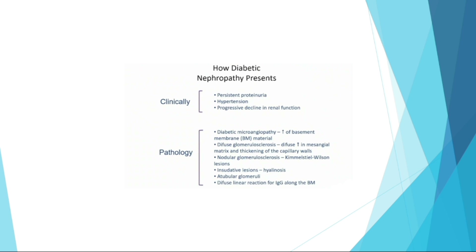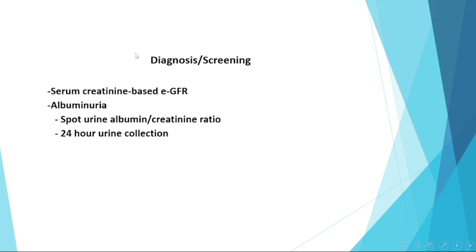Diabetic nephropathy presents both clinically and pathologically. Clinically: resistant proteinuria, hypertension, and progressive decline in renal function. Pathologically: diabetic microangiopathy, increased basement membrane material, diffuse glomerular sclerosis, increased mesangial matrix, thickening of capillary walls, nodular glomerular sclerosis, hyalinosis, and a diffuse linear reaction for IgG along the basement membrane.